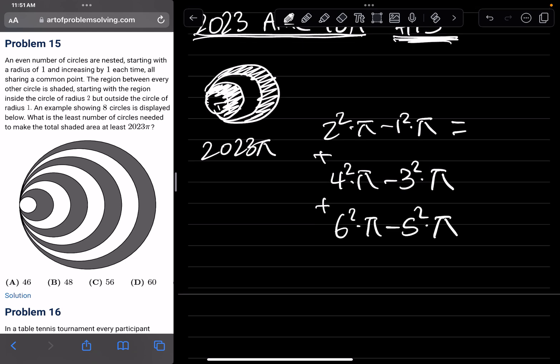And let's simplify this. This will be 3π. This is 16 minus 9, which is 7π. And this is 36 minus 25, which is 11π. And we keep on adding like this.